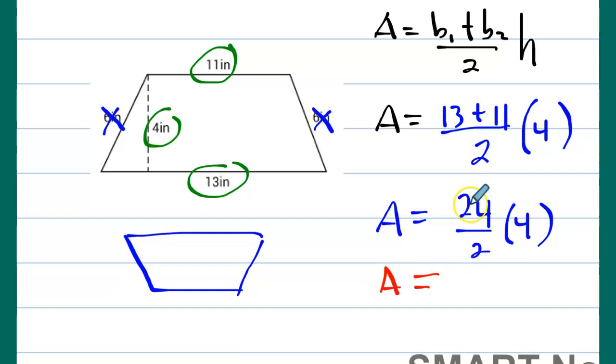So this is 12 times 4. A equals 48 square inches. Always remember to put your units of measure, because once you forget about your unit of measure, you usually take points off.